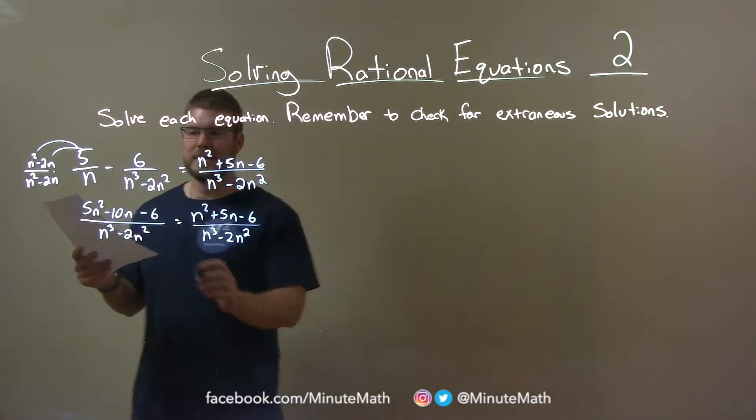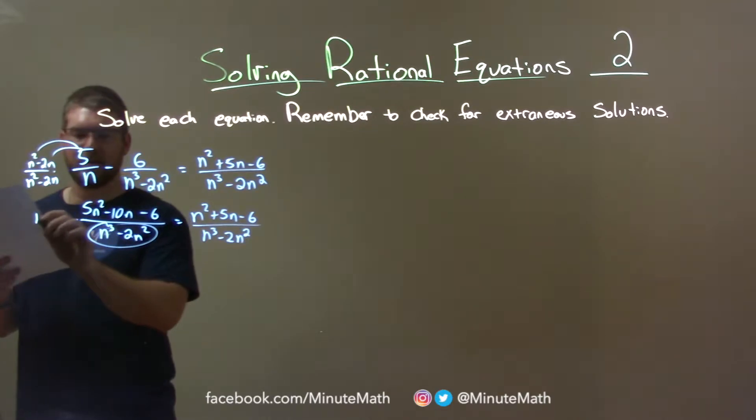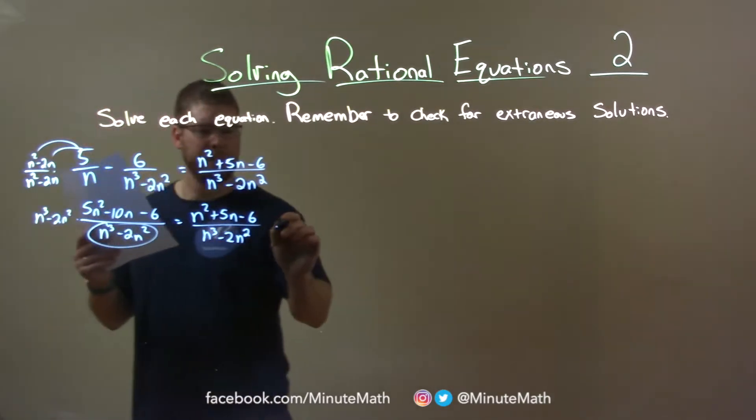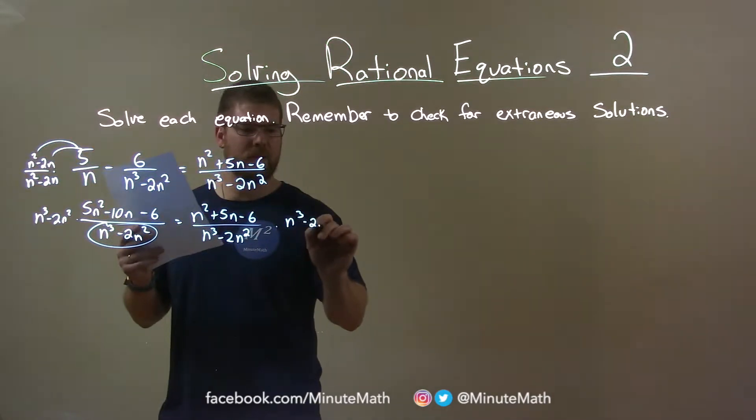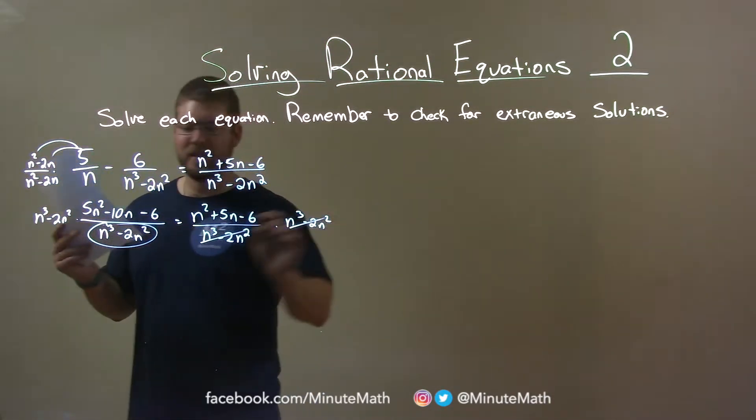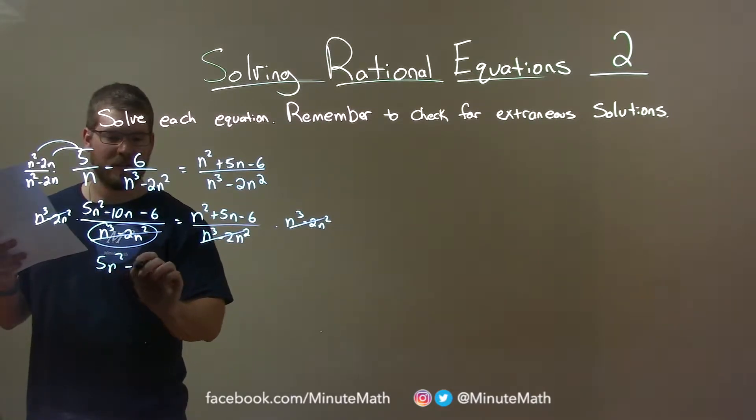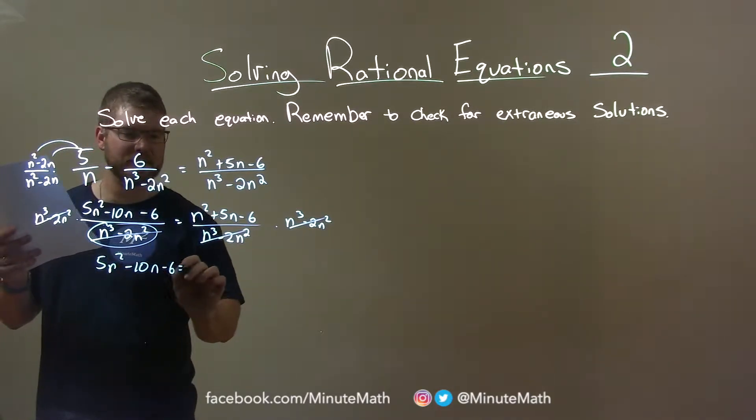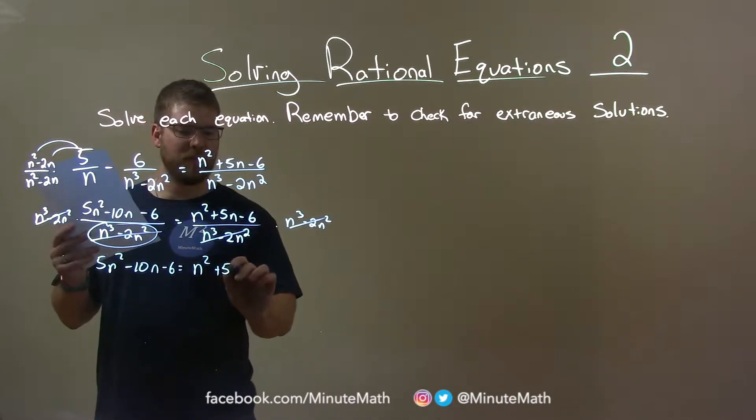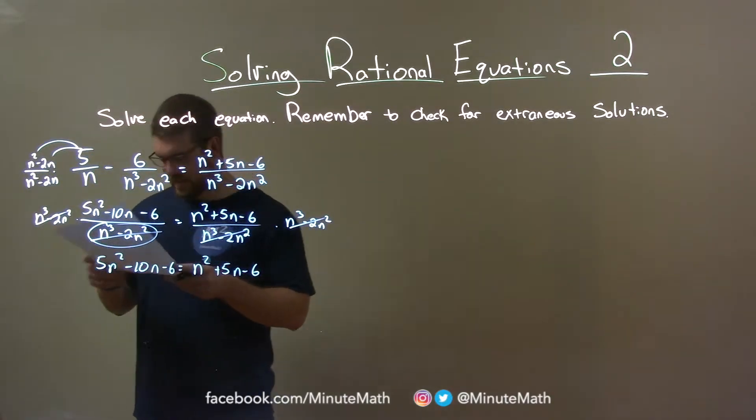Now I'm going to take this denominator and multiply it by both sides: n to the third minus 2n squared. These eliminate, that's the whole point. And we have 5n squared minus 10n minus 6 equals n squared plus 5n minus 6.